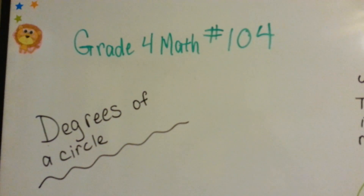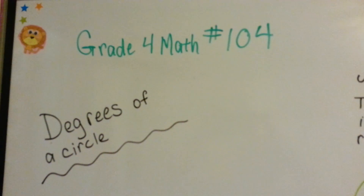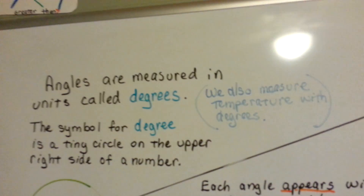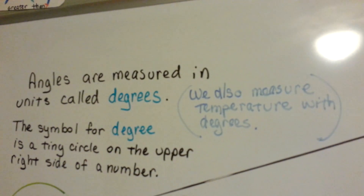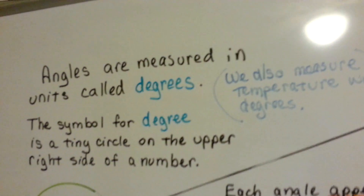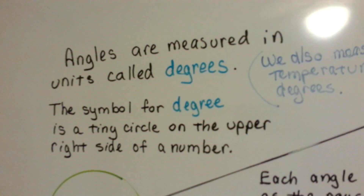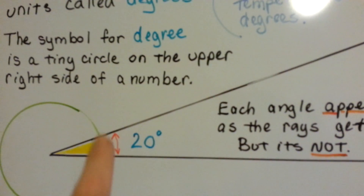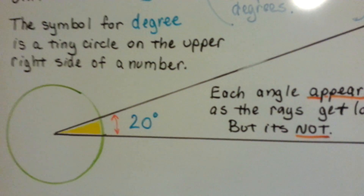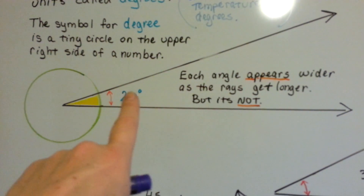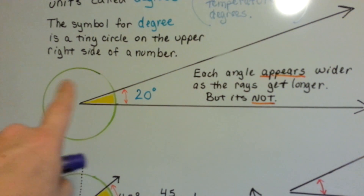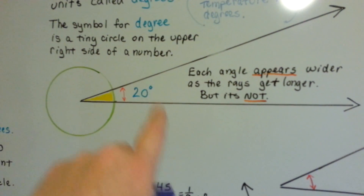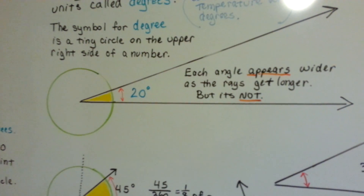Grade 4 math, number 104: degrees of a circle. Angles are measured in units called degrees. We also measure temperature with degrees. The symbol for degree is a tiny circle on the upper right side of a number — degrees. This is a circle with an angle of 20 degrees in it. So we write 20 and in the upper little right-hand corner we put the little tiny circle for degrees.